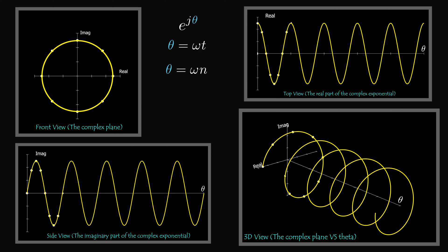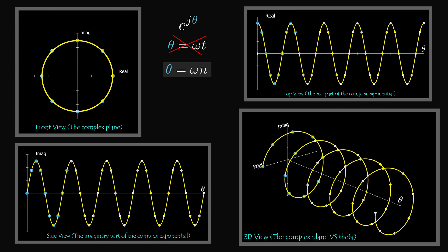If the complex exponential is discrete, then it is defined only at specific points in time. The time is discretized, and instead of t, theta is a function of n, where n is an integer. The discrete complex exponential function is defined only at n equals 1, n equals 2, n equals 3, and so on.